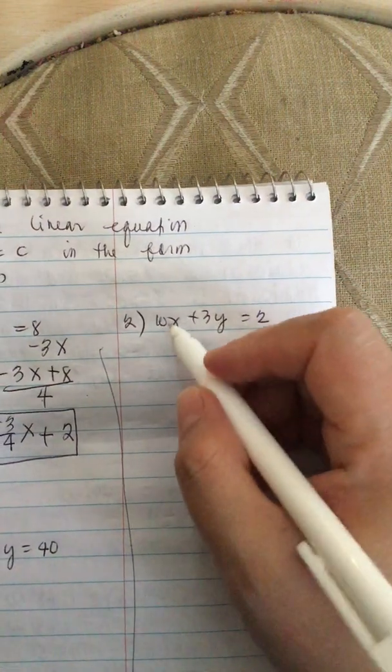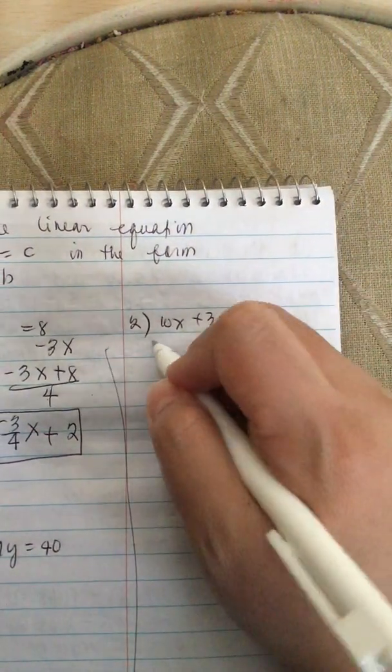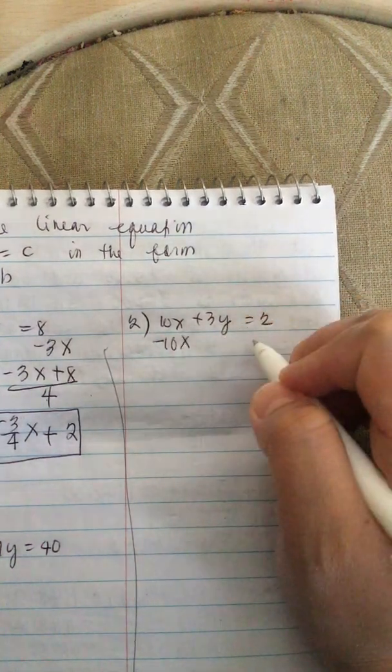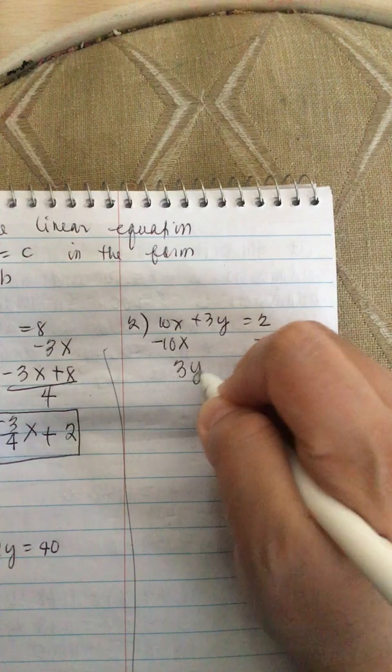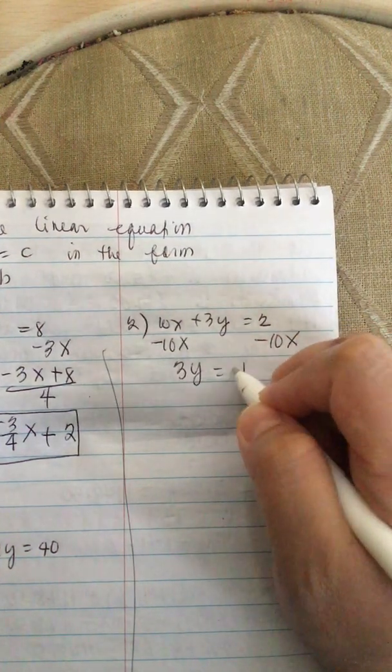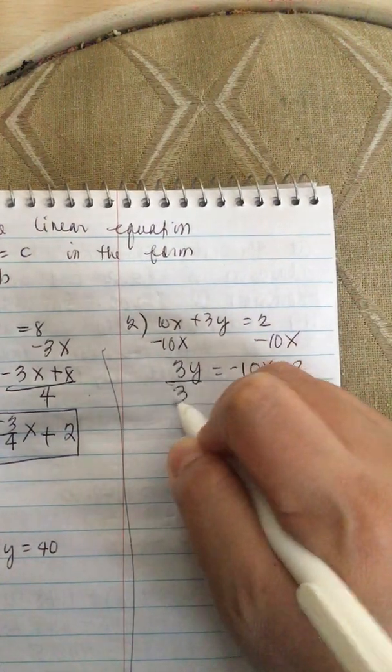Here we have 10X plus 3Y equals 2. So we subtract minus 10X minus 10X. We have 3Y is equal to minus 10X plus 2, and then we divide by 3.